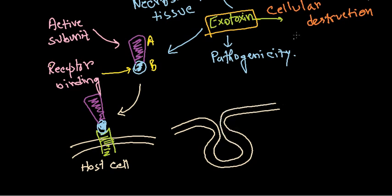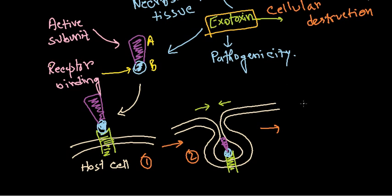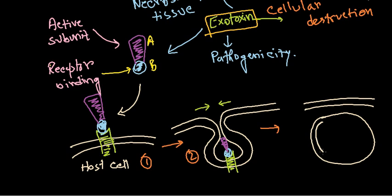As the cell engulfs the toxin, the membrane closes around it forming a vesicle inside the cell. Inside this vesicle, the receptor-bound B subunit and the active A subunit are enclosed together, completing the engulfment process.